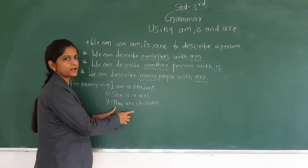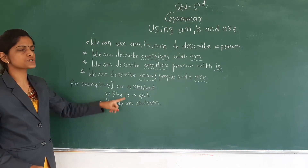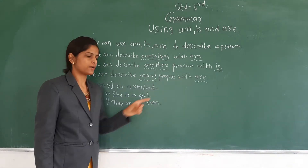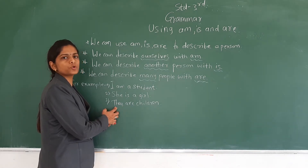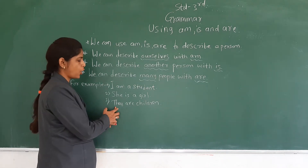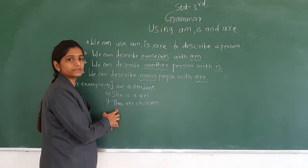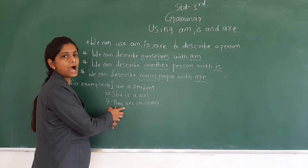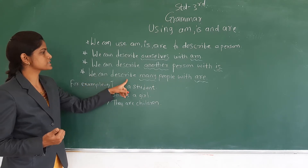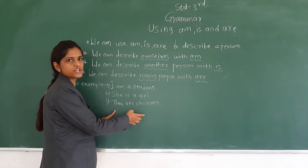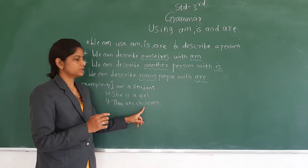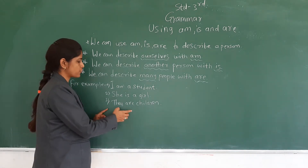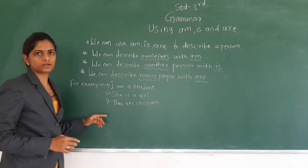What is the third? They are children. Why is are used here? Because we can describe many people with are. They indicates the person is more than one. Where there are persons more than one, we need to use are to describe those people. Also, children is plural — child is one, children is more than one — so from this also we come to know that we have to use are.